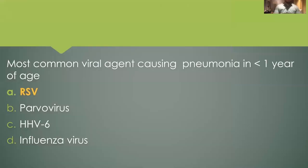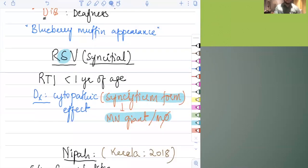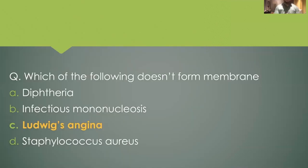The most common viral agent causing respiratory tract infection in children less than one year of age — the answer is RSV, Respiratory Syncytial Virus. RSV causes respiratory tract infections in children under one year of age.